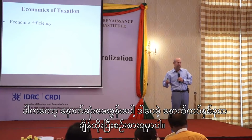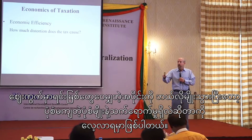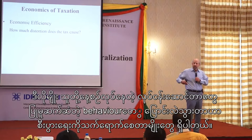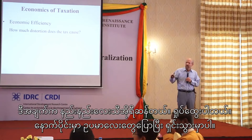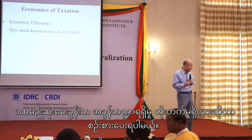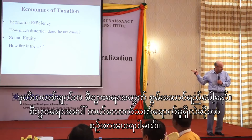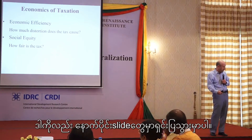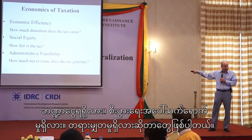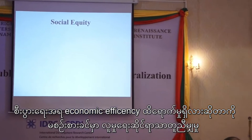There are two other questions you should also ask. What is the impact on economic efficiency — on the allocation of resources? Do people do things differently? Does it change behavior so they don't pay the tax? All of these behavioral changes have a cost to the economy. The third question is: is the tax fair? So the three criteria are: revenue, economic efficiency, and social equity.